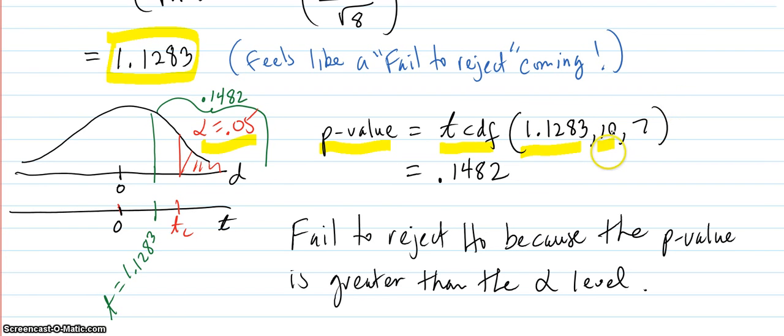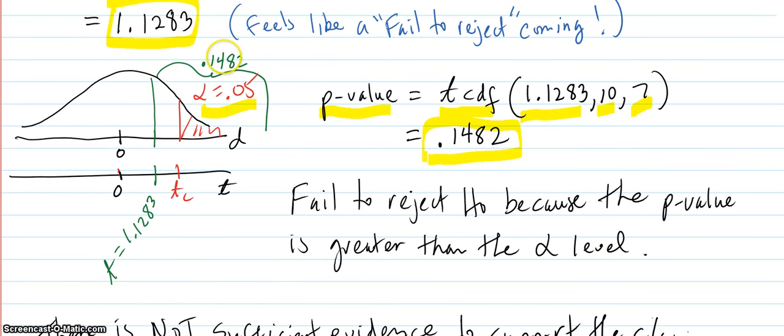I'm going to 10 because there's hardly any area out there at 10. Seven degrees of freedom, eight minus one, seven degrees of freedom. Comes out to be p-value of 0.1482.